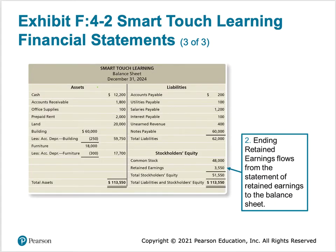On the balance sheet we have all of our assets, all of our liabilities, and then under stockholders' equity we see common stock and retained earnings, which gives us total stockholders' equity. Remember that retained earnings is coming from your statement of retained earnings.